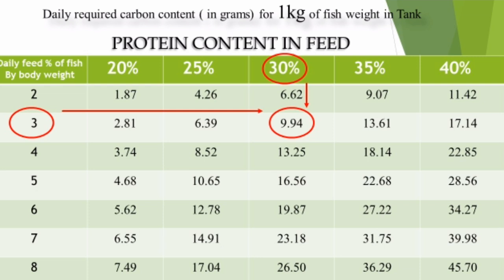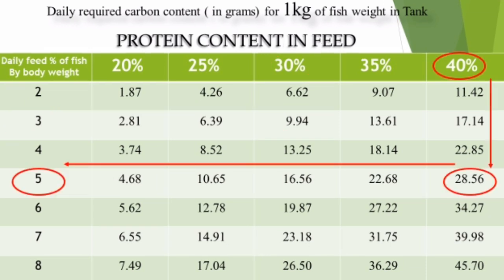For example, if you select 3 percent carbon and your feed has 30 percent protein, you can use the table to find you need to add 9.54 grams. If you add 9.94 grams per 100 grams, and scale that up, you will need approximately 1.994 grams or 28.56 grams depending on the quantity.